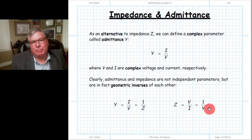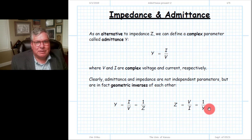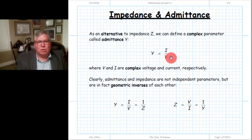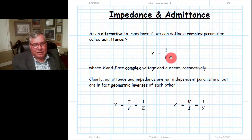Earlier we talked about trans-impedance parameters and trans-admittance parameters, the impedance matrix and the admittance matrix, and the relationship between admittance and impedance. Let's go back and review that once more. Admittance is simply the ratio of complex current to complex voltage — current and voltage at the input, at the load, or at any location on a transmission line to the voltage at that location — a complex number.